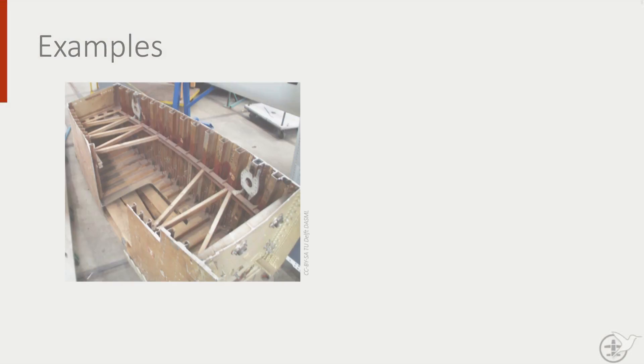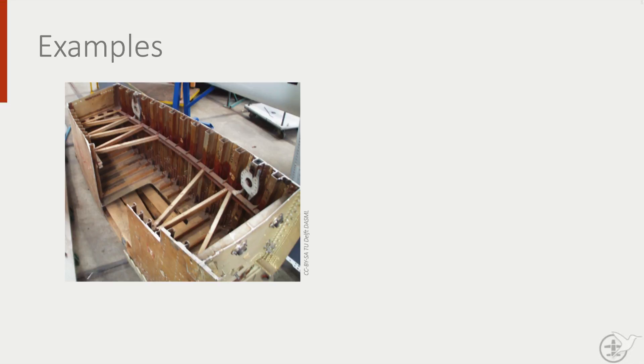Truss structures are still used in aerospace, but more inside structures to transfer loads, such as ribs in wings or in the center section of an aircraft. They are also used a lot in space structures. However, trusses are hardly used anymore as the primary structure of a fuselage or a wing.